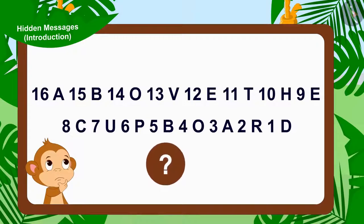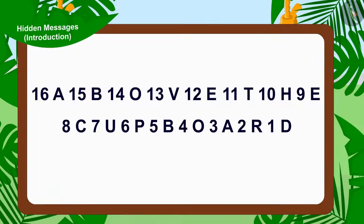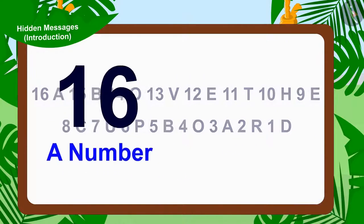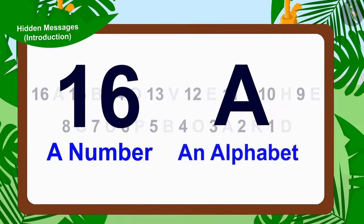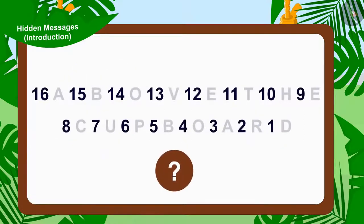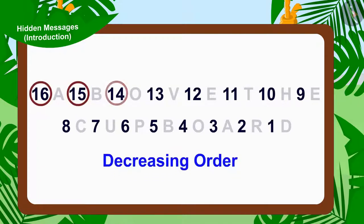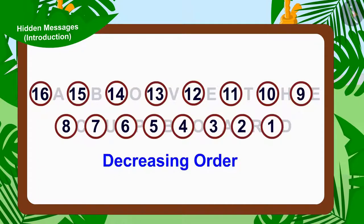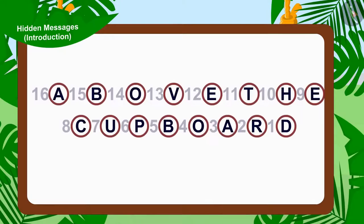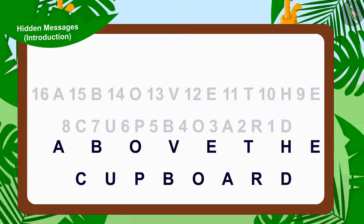Can you see any hidden message in Appu's second letter? If we look at it carefully, we will see that there is a number and an alphabet written every time. Are you able to find any hidden message in the numbers? The numbers are in decreasing order, but there is no hidden message that can be found in them. Now let us take a look at the alphabets. If we write the alphabets separately, we will find this written. Were you able to find the second hidden message through these alphabets?